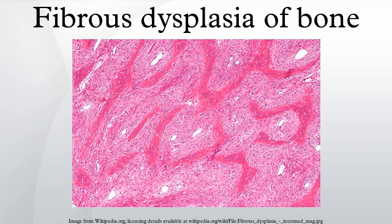In most cases, fibrous dysplasia has no symptoms and is only diagnosed by accident during investigations for an unrelated medical problem. When symptoms occur, they can include pain caused by the expansion of bone. Treatment for this is pain management therapy, analgesics and anti-inflammatory medication. Other symptoms include irregular bone growth, bone deformity, and increased susceptibility to bone fractures.